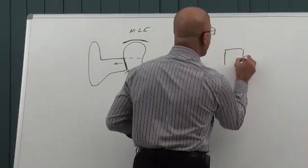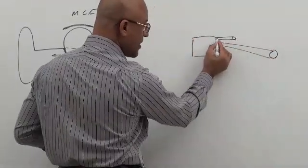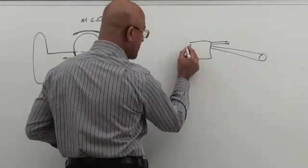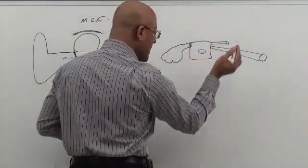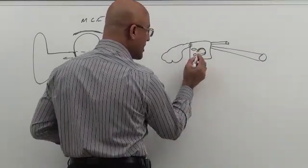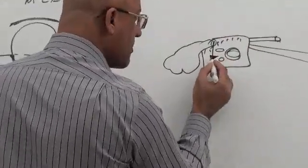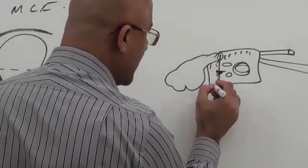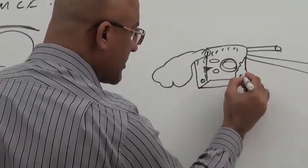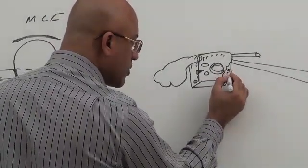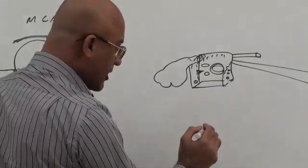Drawing from front to back — anteriorly there are two canals: one for tensor tympani and one for the Eustachian tube. Posteriorly there is the mastoid antrum and mastoid air cells. On the medial wall: what is this? The promontory. What is this? Oval window. Round window. Facial canal. And what is this muscle? Stapedius muscle with the pyramidal eminence. There is a canaliculus posteriorly for chorda tympani, and anteriorly a canaliculus for the exit of chorda tympani. Two canaliculi for corticotympanic nerves. And there is a bulge for the lateral semicircular canal.